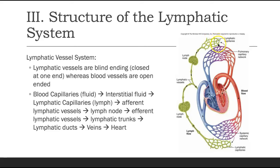These lymphatic capillaries start off blindly. The cells sit on top of one another like shingles — they are still endothelial cells, flat and one layer thick. This arrangement allows fluid to move in through those mini valve flaps, and once inside the lymphatic capillary it cannot go back out in the other direction, ensuring one-way flow.